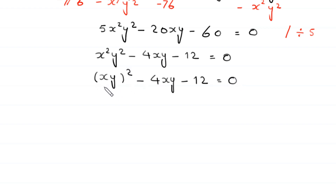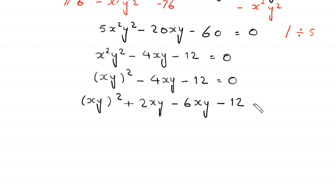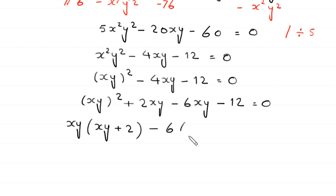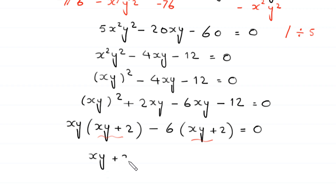We can write x squared y squared as (xy) squared, giving (xy)² minus 4xy minus 12 equals 0. This is a quadratic equation in terms of xy, and it is factorable. We split negative 4xy as plus 2xy minus 6xy, then factor: xy(xy plus 2) minus 6(xy plus 2) equals 0. Factoring out (xy plus 2) gives (xy plus 2)(xy minus 6) equals 0.